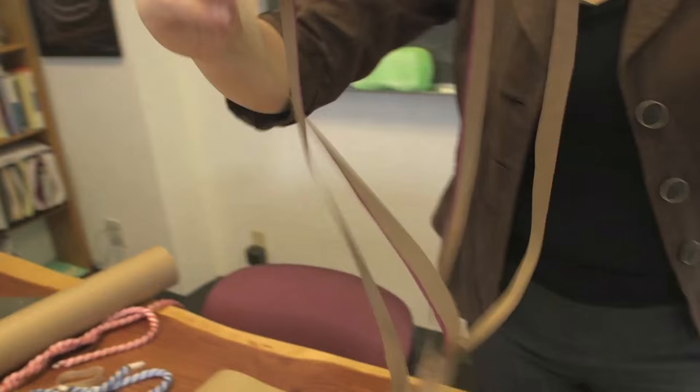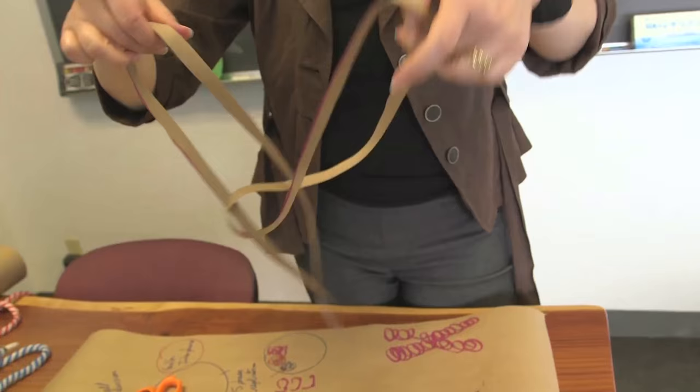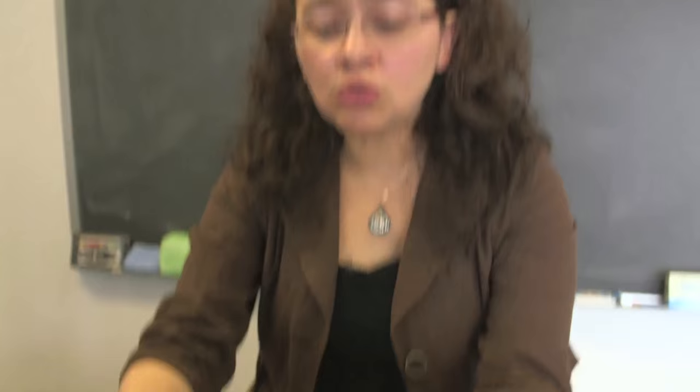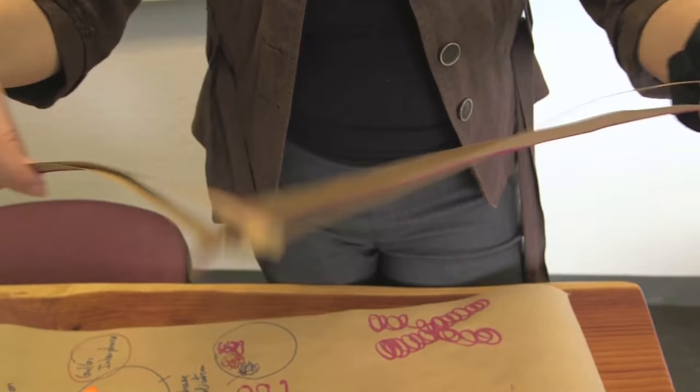So they are two independent circles. Each one of them has exactly the same genetic code. But these two circles are interlinked. So now, if each new cell wants to inherit one circle, they will pull. If they pull, they will break. If DNA breaks, that's very bad news for your cell.